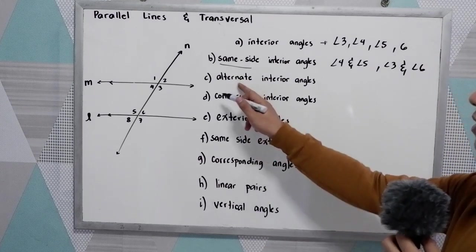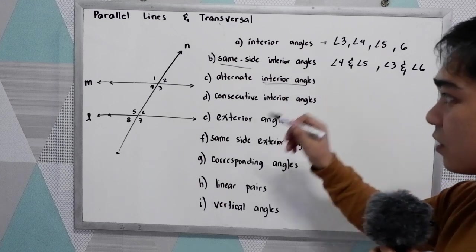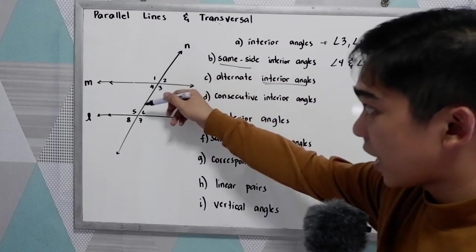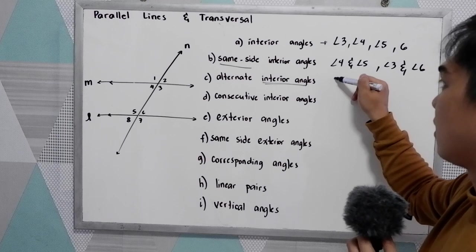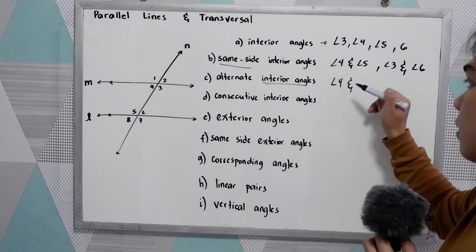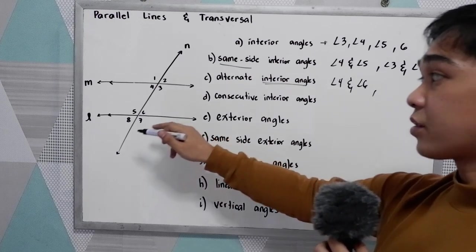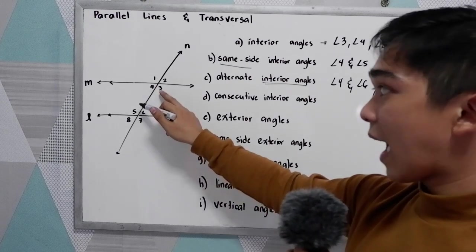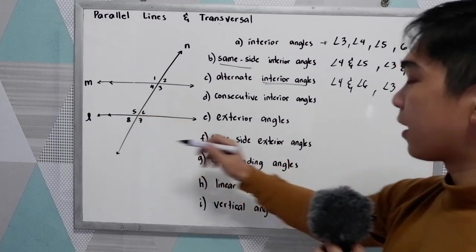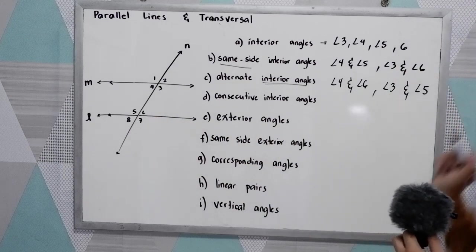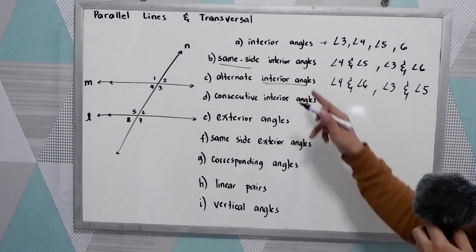Next, alternate interior angles. We're still at interior angles, but alternate. We have angle 4 and angle 6, and we also have angle 3 and angle 5. Those are the alternate interior angles.